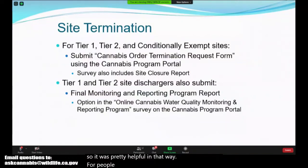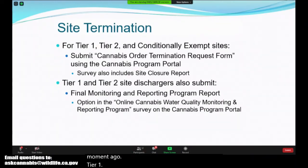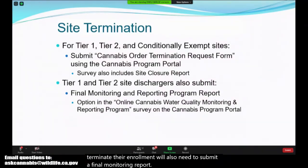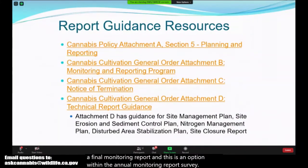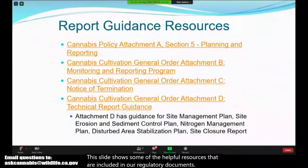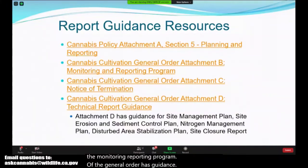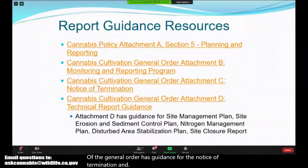For people who have been enrolled and wish to terminate their enrollment, you will need to submit a cannabis order termination request form using the same program portal. Tier 1 and Tier 2 dischargers who wish to terminate will also need to submit a final monitoring report, which is an option within the annual monitoring report survey. Attachment B has guidance on the monitoring and reporting program, Attachment C has guidance for the notice of termination, and Attachment D has technical report guidance to assist you with submitting your reports.